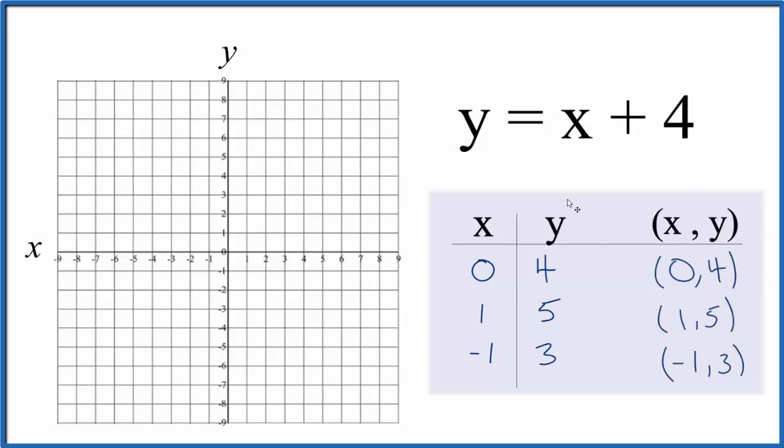So these are the points that we'll graph for the equation y equals x plus 4. Let's start out. We have x is 0, that's right here, and y is 1, 2, 3, 4. So that's our first point.